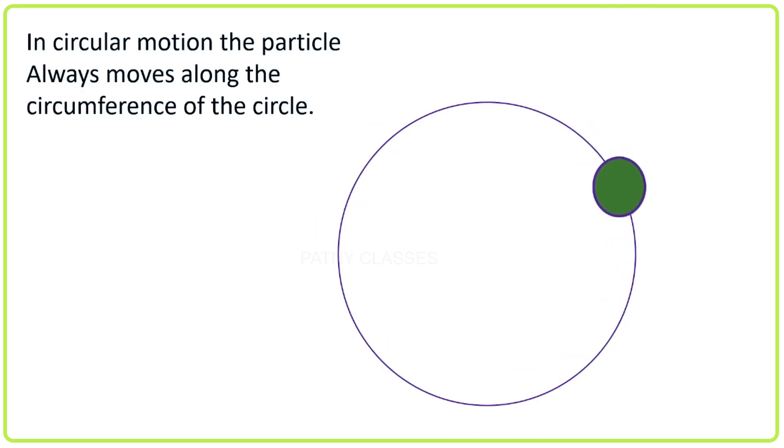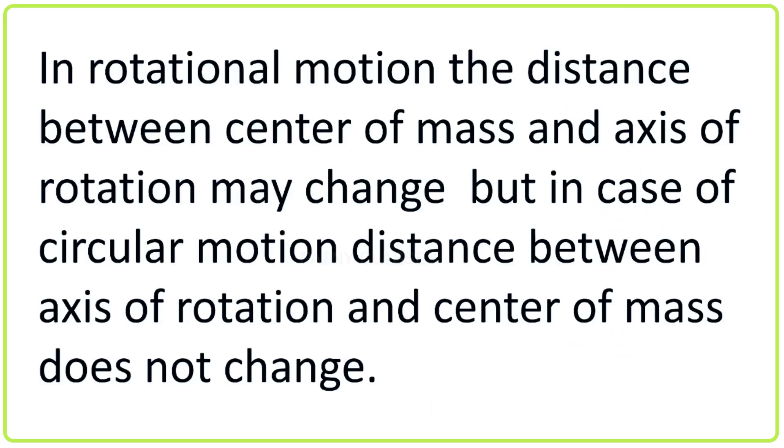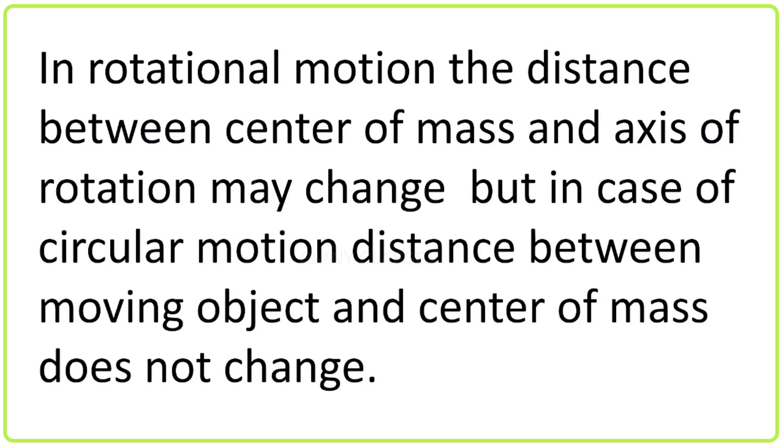In circular motion the particle always moves on the circumference of the circle. In rotational motion the distance between center of mass and axis of rotation may change.